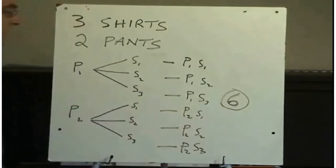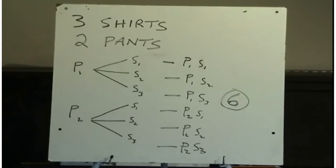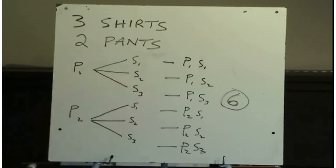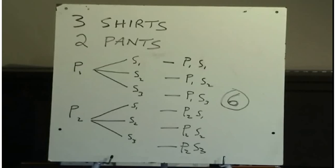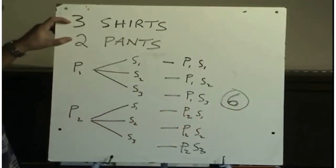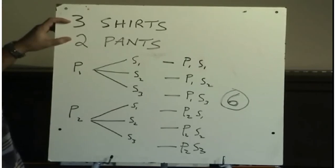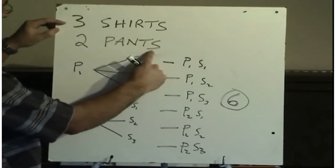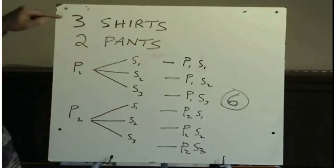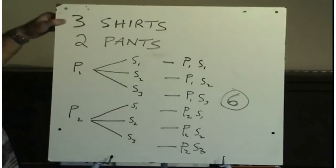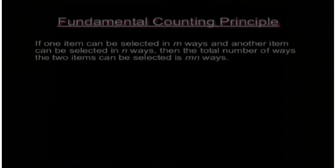There are six different ways of getting dressed in the morning if you have three shirts and two pants. No one wants to draw tree diagrams every time, so looking at our answer of six and the two numbers — three and two — we get to the fundamental counting principle: if we have three choices here and two choices here, we multiply them. Three times two gives us six outcomes. The fundamental counting principle states that if one item can be selected in m ways and another in n ways, then the total number of ways the two items can be selected is m times n.